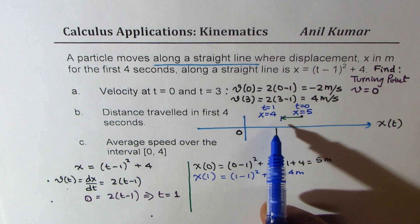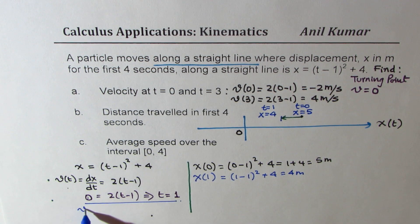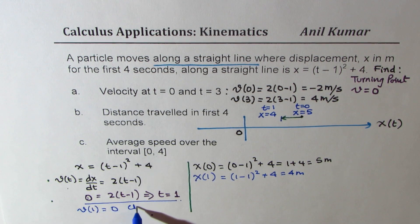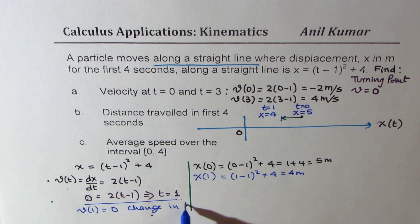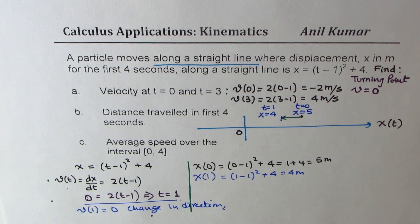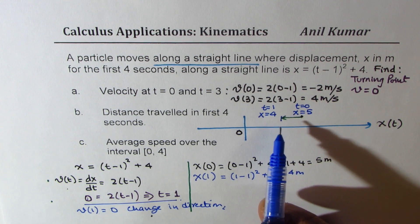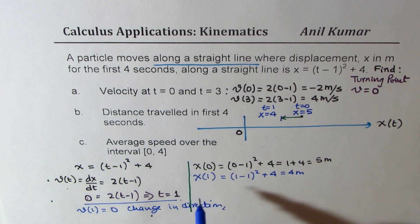At t equals 1, velocity is 0 — we know v of 1 is 0. This represents a change in direction, which is a very important concept to understand. We now need to find the distance travelled in 4 seconds.